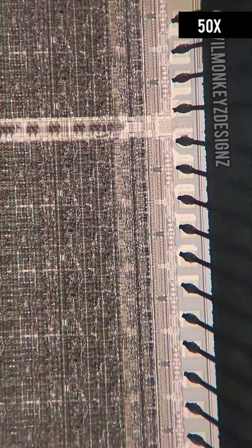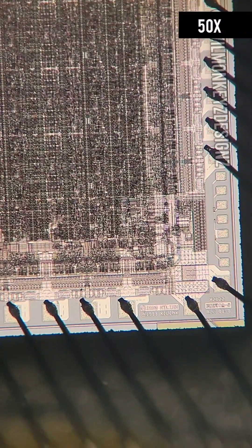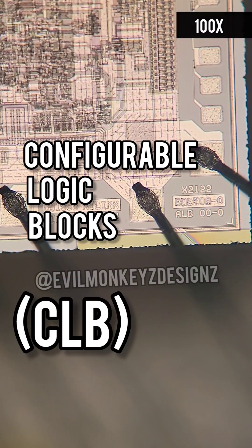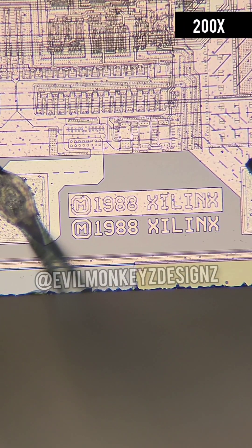The XC3090 happens to be the beefiest in the XC3000 logic cell array family. The logic gates are arranged in configurable logic blocks, of which the XC3090 has 320.